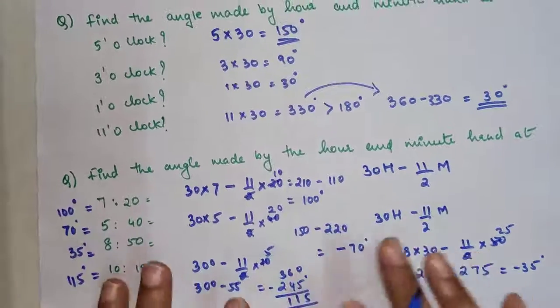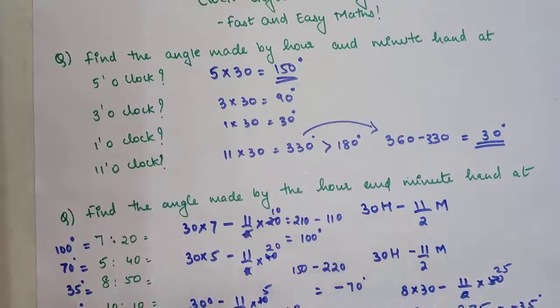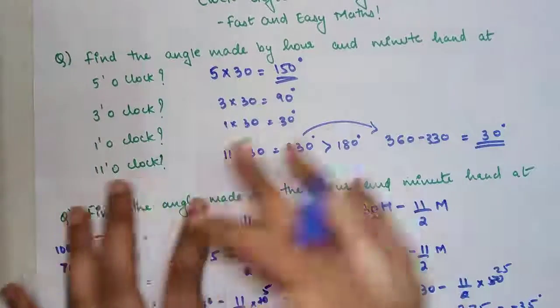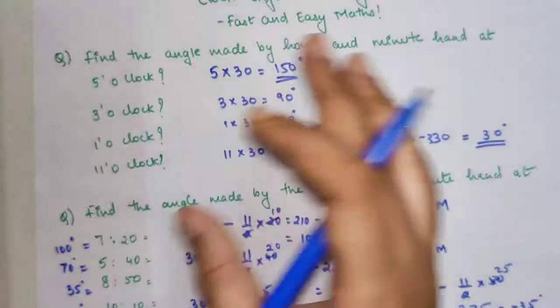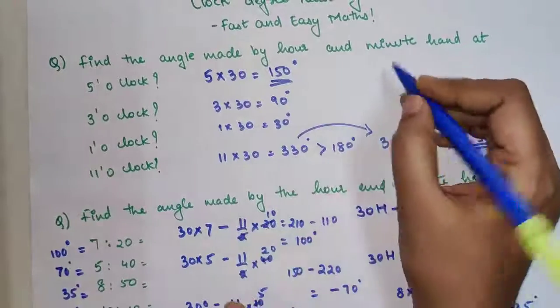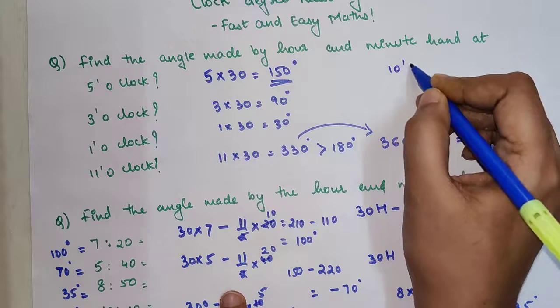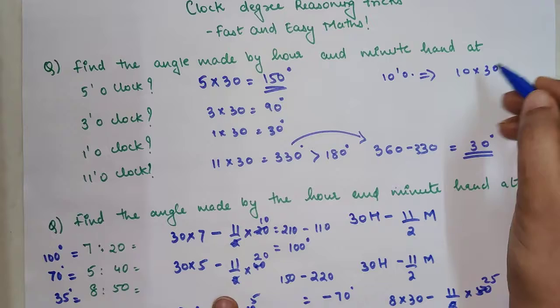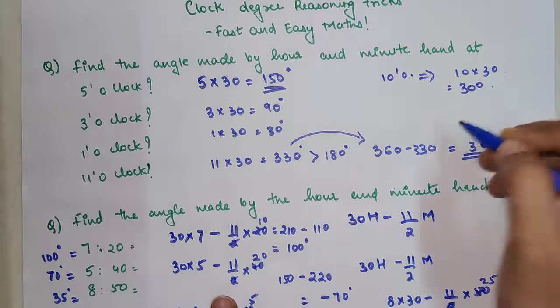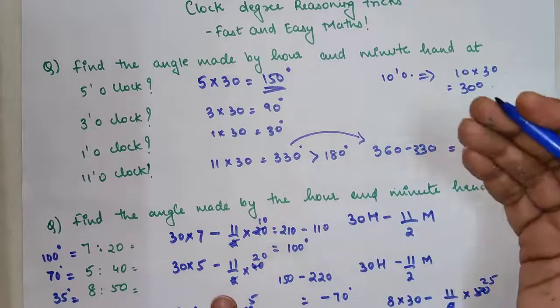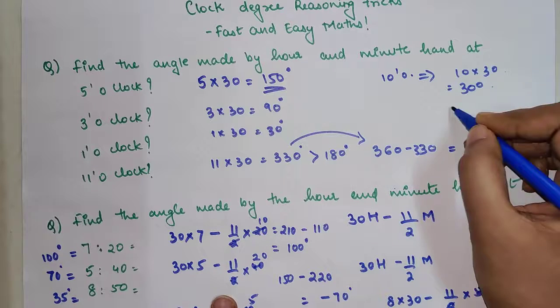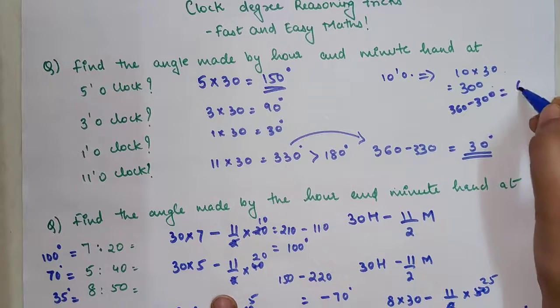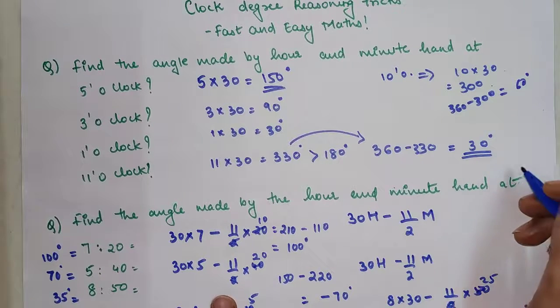I hope you all are understanding how to do these things. So now very quickly let's revise. If they haven't given you anything, they haven't given you the minutes, they have just told you any particular hour value. So if they had given you something like 10 o'clock, so all you had to do is just multiply 10 with 30 and that would get you your answer which is 300. Now problem is 300 is way above 180. So in that case what you do is you just subtract 360 from 300, or rather 300 from 360. Your answer is 60 degrees.